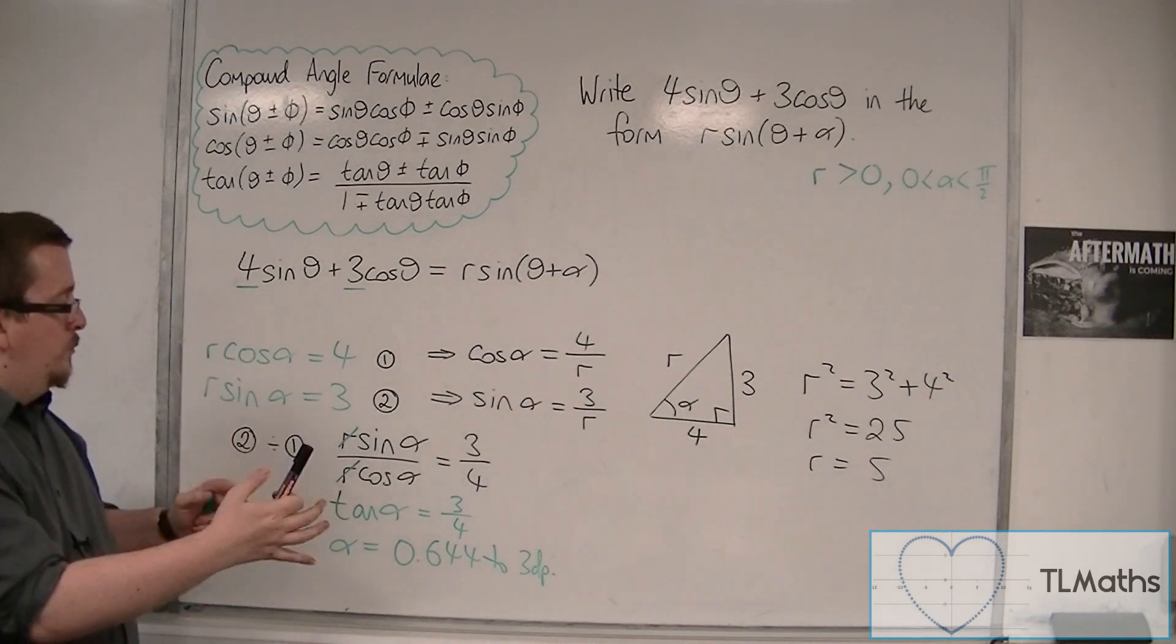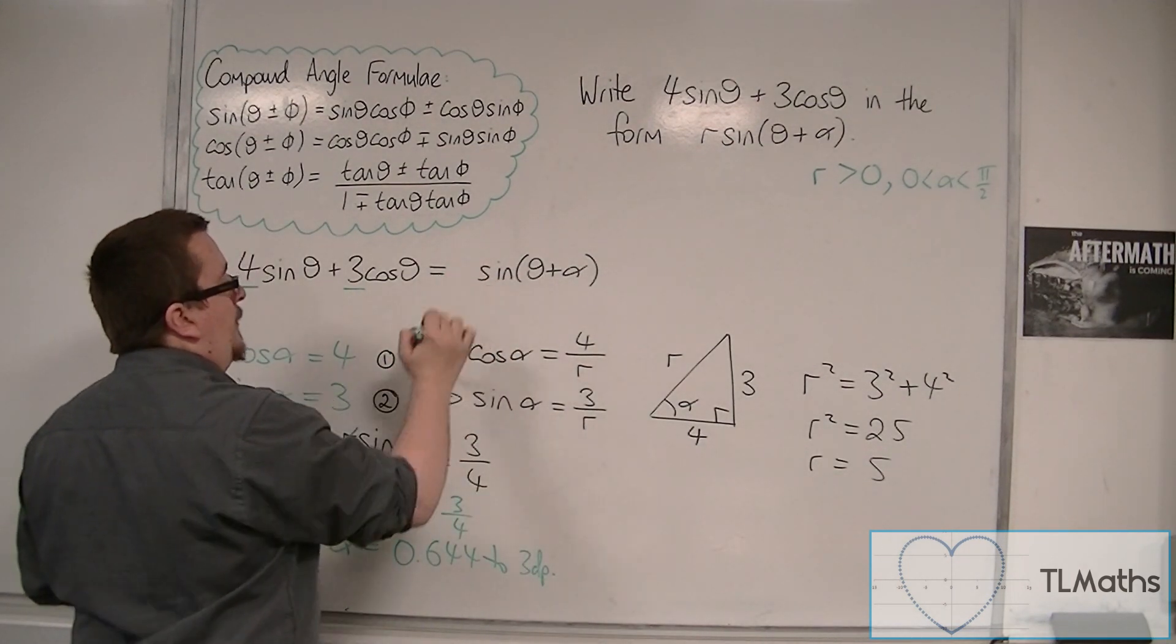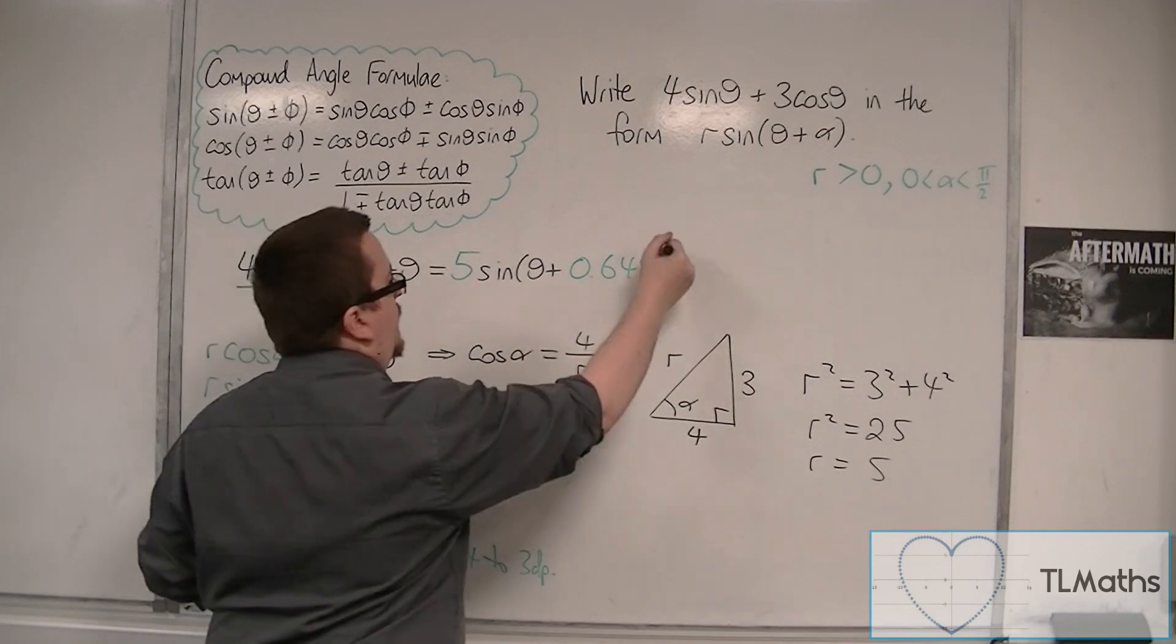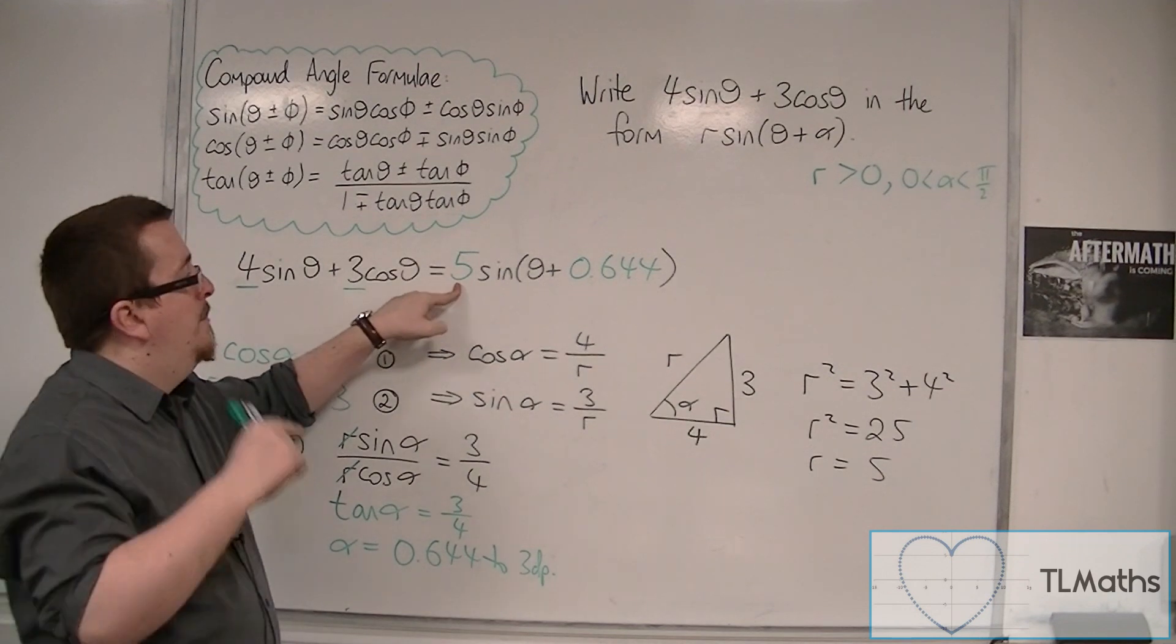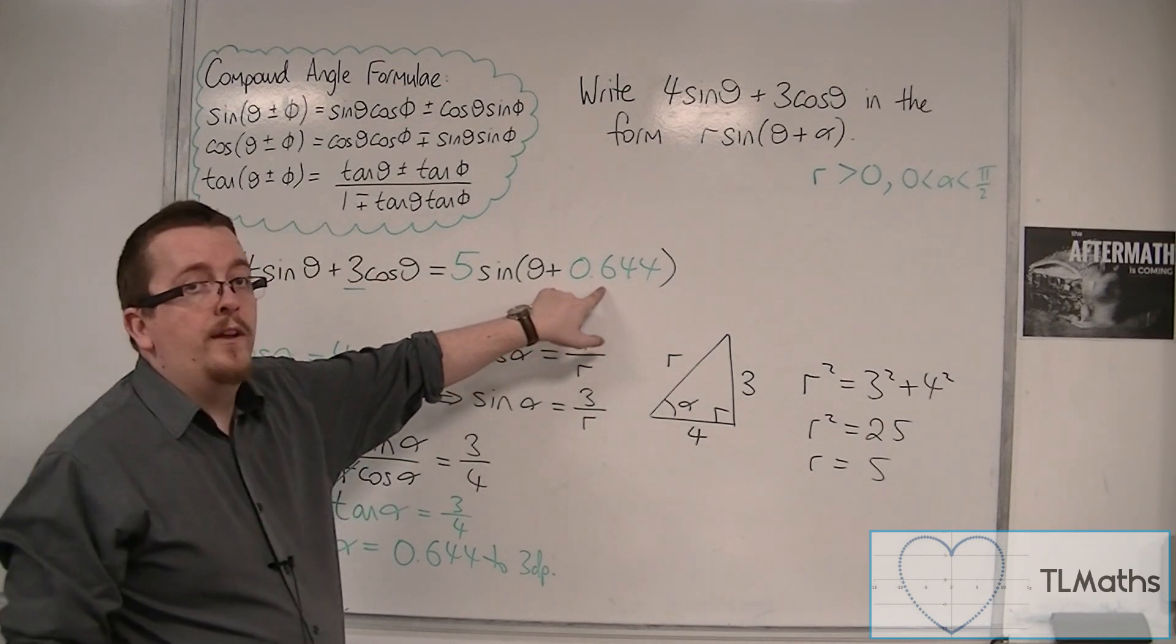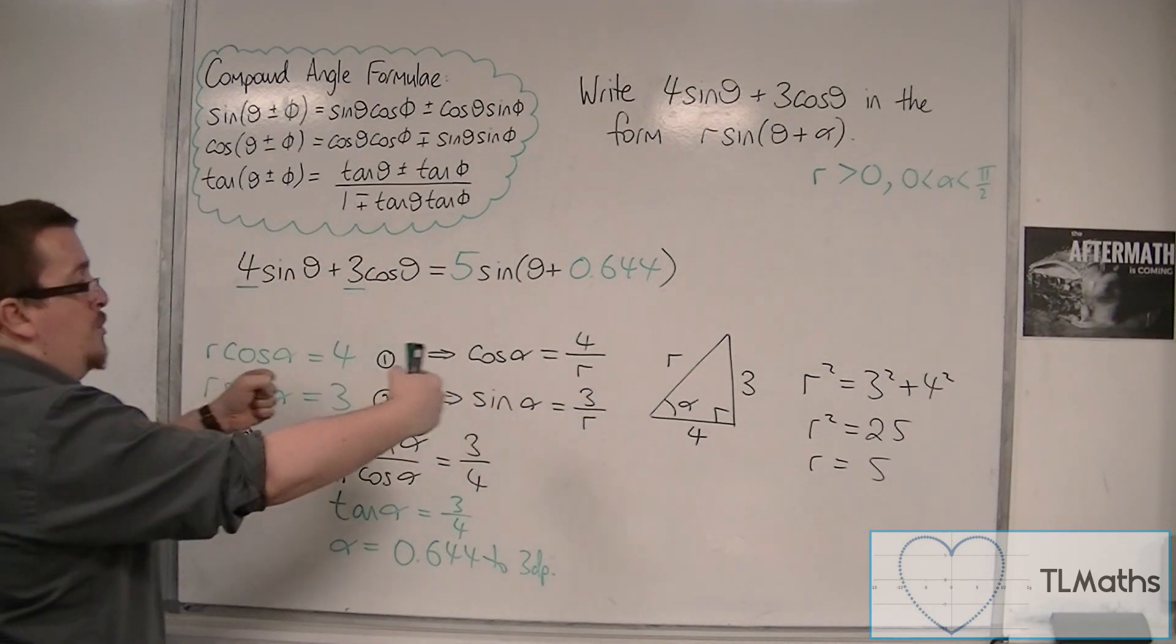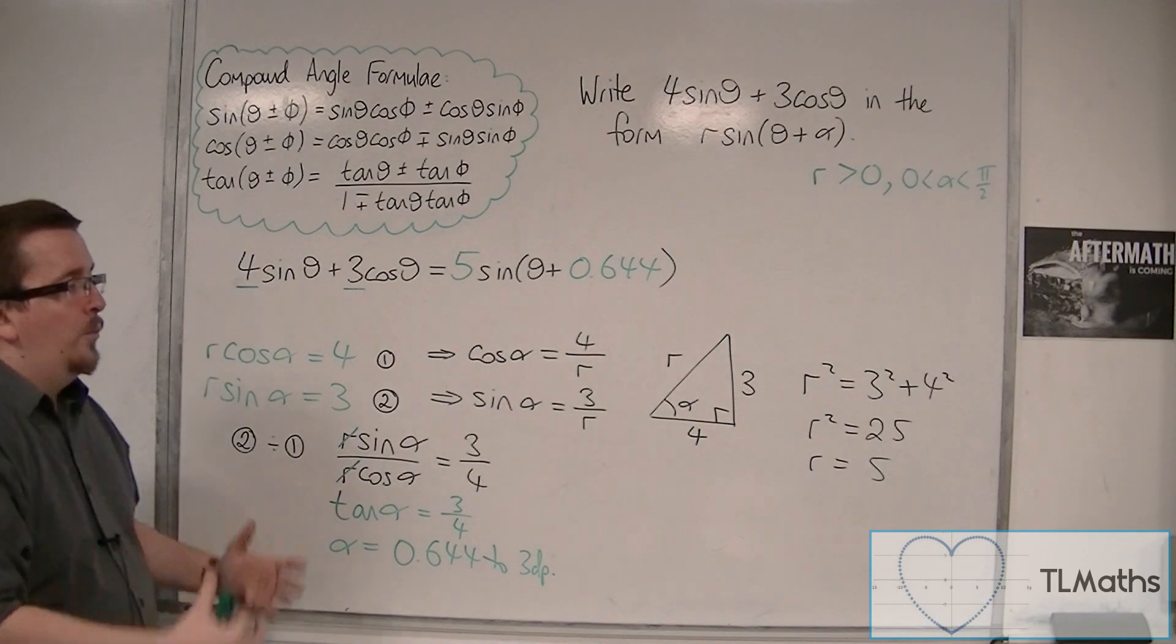So we now have R, we've got alpha, and so we can write 4 sine theta plus 3 cos theta as 5 sine of theta plus 0.644, 3 decimal places. So this means that the curve has been stretched parallel to the y-axis by factor 5, and translated by the vector minus 0.644, 0. In other words, it's been stretched, so it's now going through 5 and minus 5, and it has been moved to the left by 0.644. So that's the process that we need to work through.